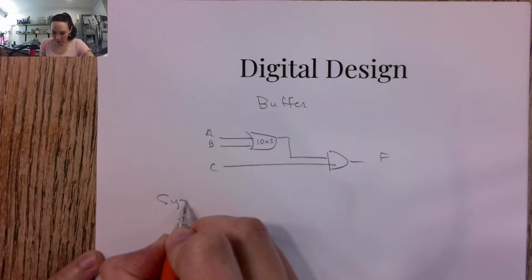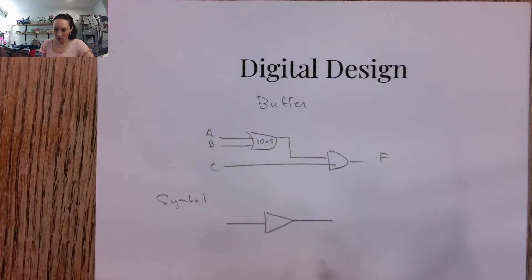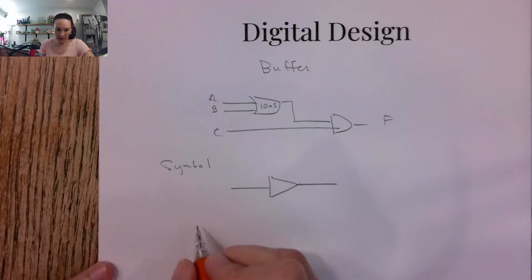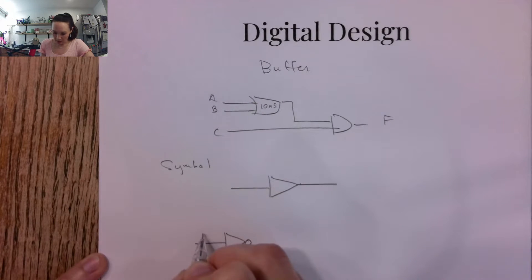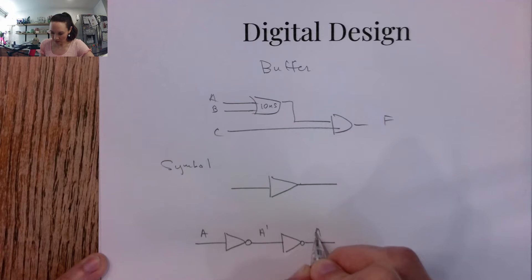So the symbol for a buffer just looks like a triangle here, it's like an inverter but without the bubble, and one way that we can implement this is we can actually just use back-to-back inverters. So if we have an inverter here, we have some input, then that gets inverted to A prime and then we invert it again and we have A double prime, which is just plain A.